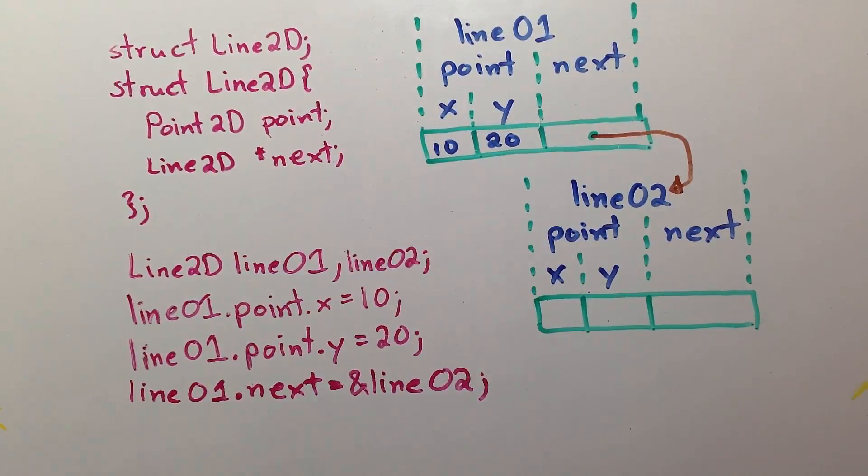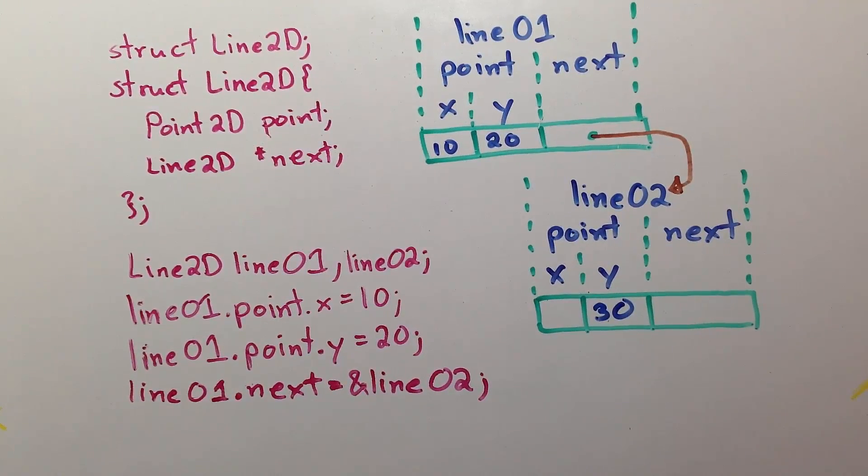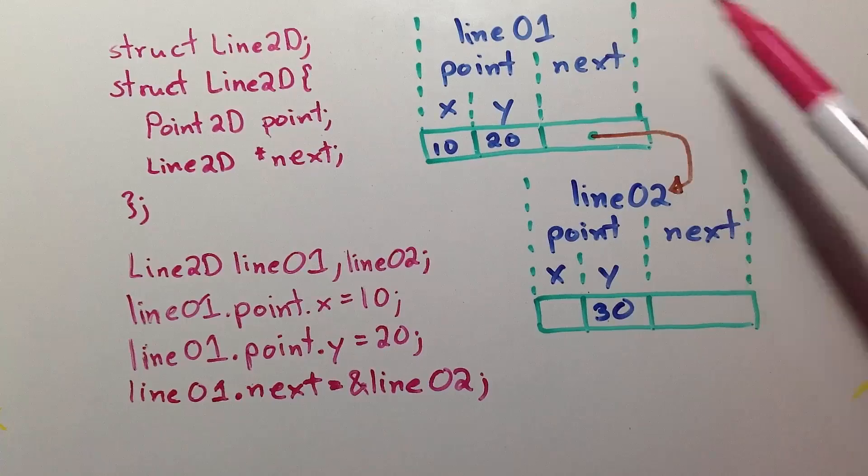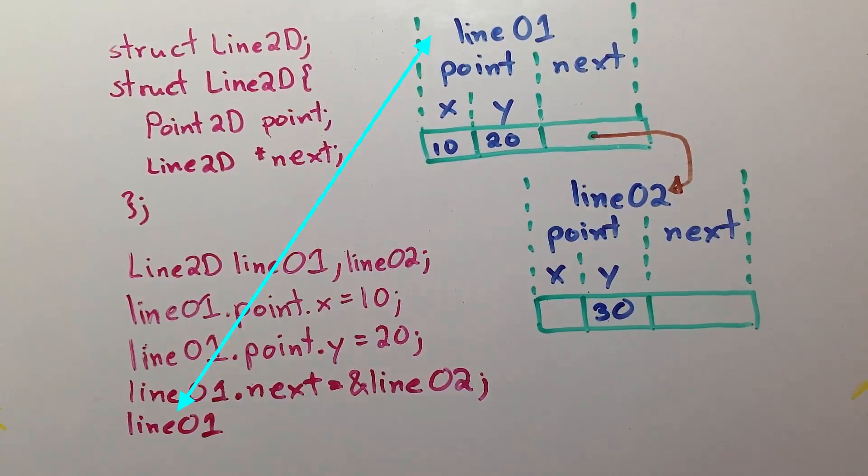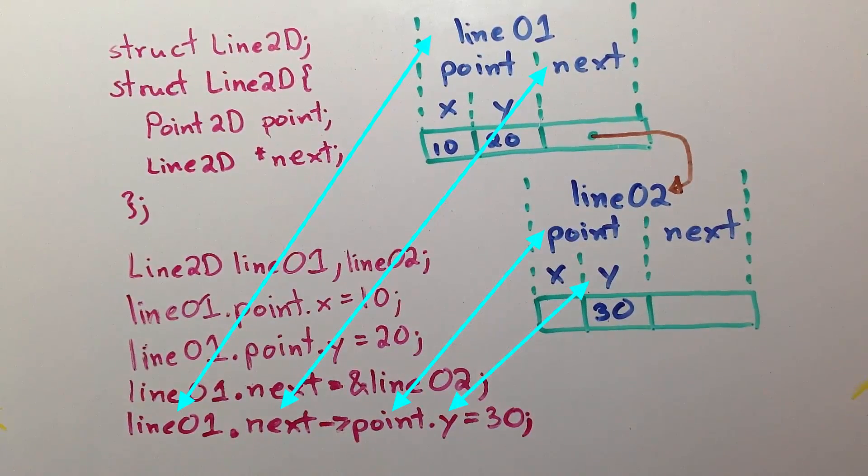Now that they're connected, I want to change this variable to 30 from line01. We do this by starting from line01.next arrow point dot y gets the value of 30.